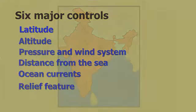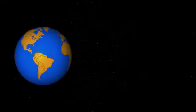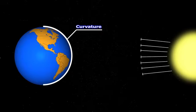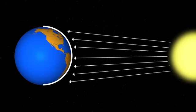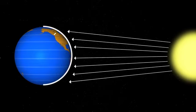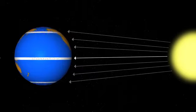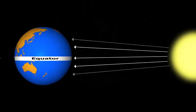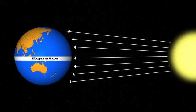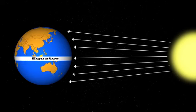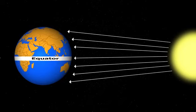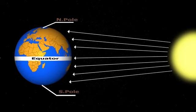The first factor is latitude. The earth is spherical in shape, and due to the curvature of the earth, the amount of solar energy received varies according to latitude. If the equator is receiving vertical rays of the sun, gradually moving towards the poles, the rays become more slanting. So air temperature decreases from the equator towards the poles.